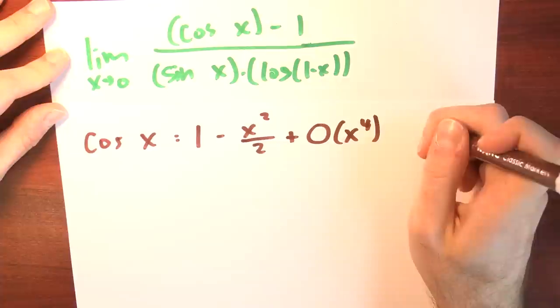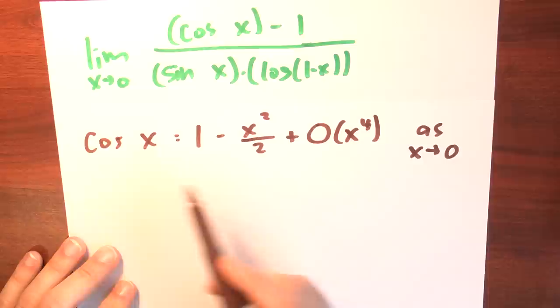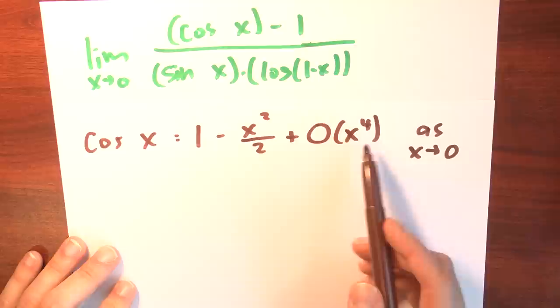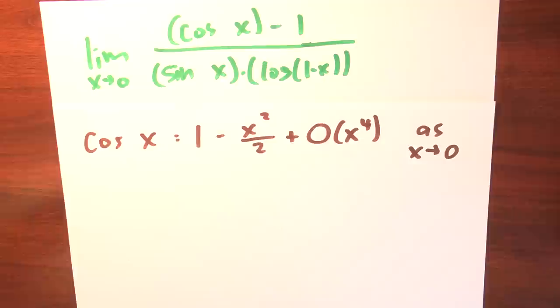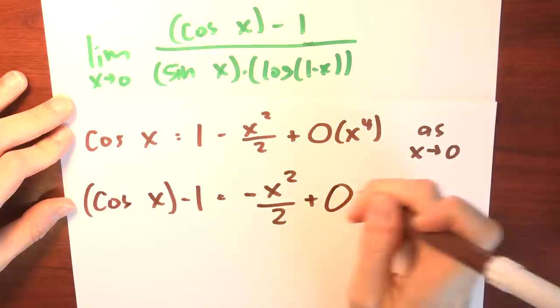As x approaches 0, cosine of x is 1 minus x squared over 2 plus higher order terms — those are the higher order terms in the Taylor series expansion of cosine around 0. The next term is an x to the 4th term, and there's also an x to the 6th term and so on. So cosine of x minus 1 equals negative x squared over 2 plus terms of degree at least 4.